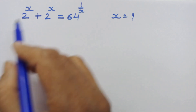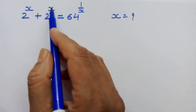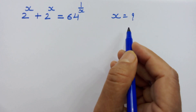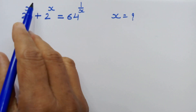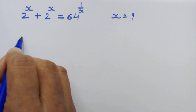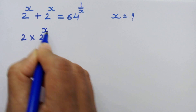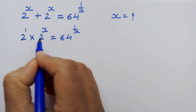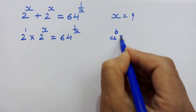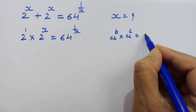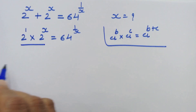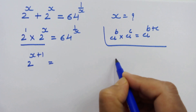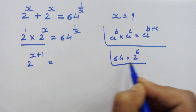Hello friends. Here we have 2 raised to x plus 2 raised to x is equal to 64 raised to 1 upon x, and we have to find the value of x. As we can see, there are 2 times 2 raised to x on the left hand side, so we can write 2 into 2 raised to x is equal to 64 raised to 1 upon x. Now, 1 is the default power of any number, and if we have a raised to b into a raised to c then we can write a raised to b plus c. Using these rules on this side, we can write 2 raised to x plus 1.